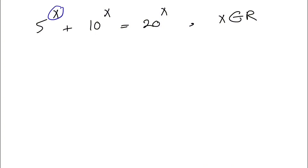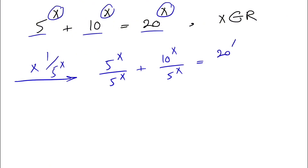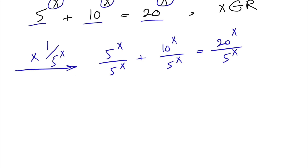The first step: we see that all of these expressions have the same exponent and the bases are 5, 10 (which is 5 times 2), and 20 (which is 5 times 4). So we're going to factor out 5 to the x — or equivalently multiply through by 1 over 5 to the x. We get 5^x over 5^x plus 10^x over 5^x equals 20^x over 5^x. We know 5^x is never 0, so the denominator is safe.